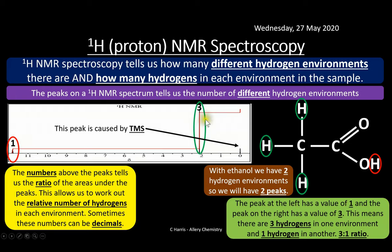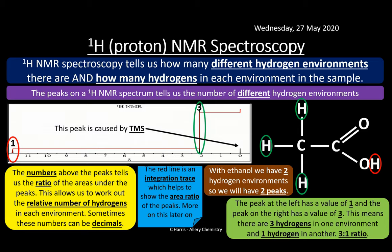The peak at the left has a value of one and the one on the right has a value of three — a three-to-one ratio — meaning three hydrogens in one environment and one hydrogen in another. The one shifted further left is bonded directly to oxygen, giving a high chemical shift. NMR machines add an integration trace — a red line — to help work out the area under each peak, with numbers at the top showing the relative number of hydrogens in each environment.